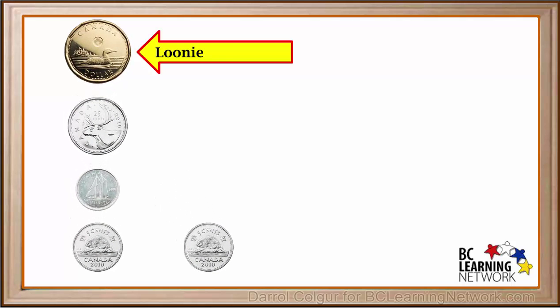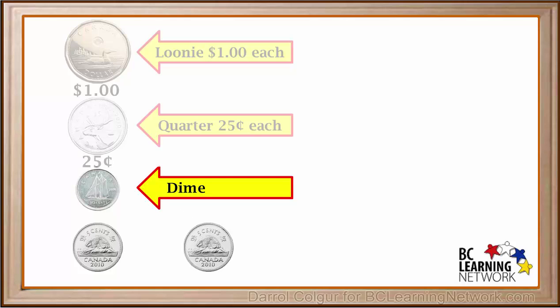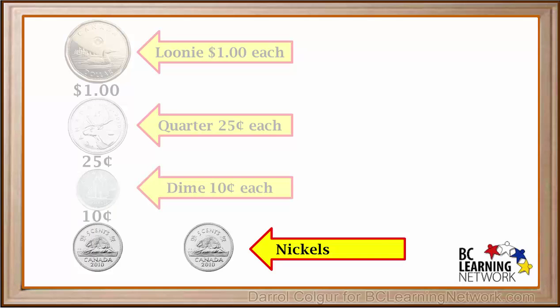We have one loonie, which is worth one dollar, one quarter, which is worth 25 cents, one dime, which is worth 10 cents, and we have two nickels, which are worth 5 cents each.